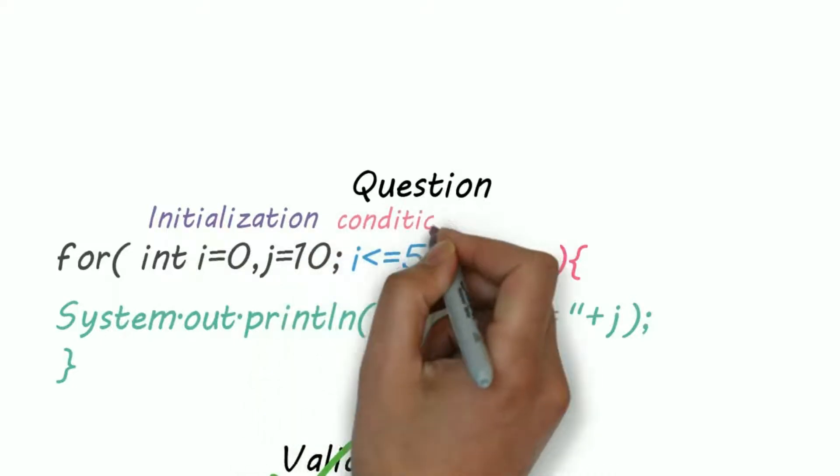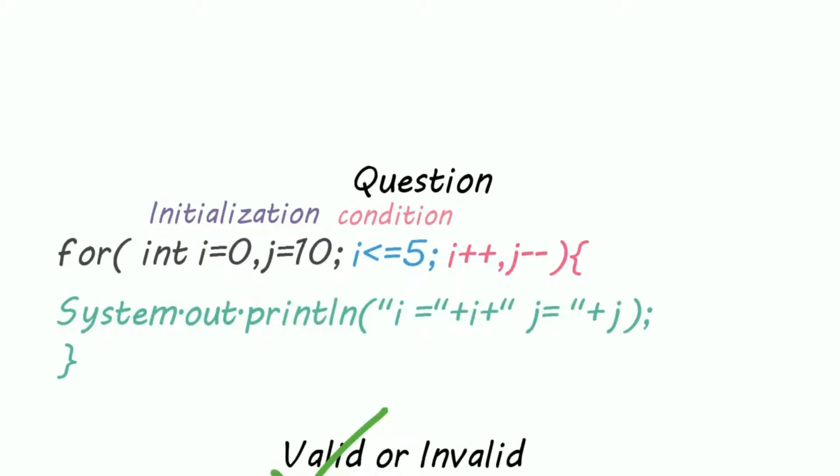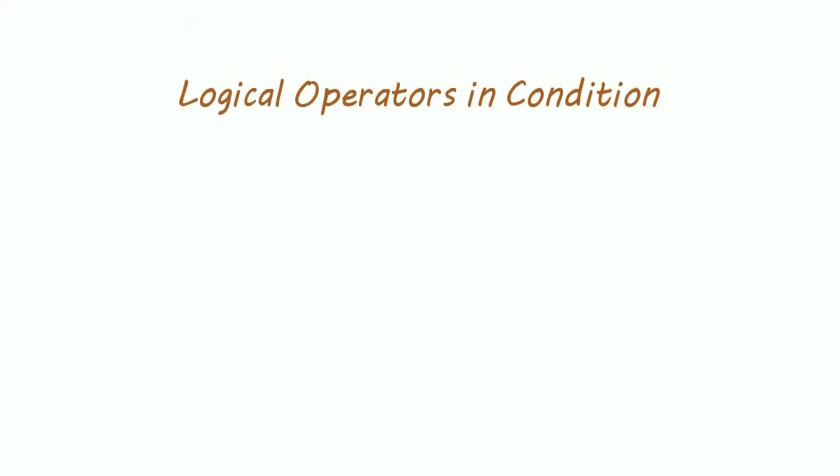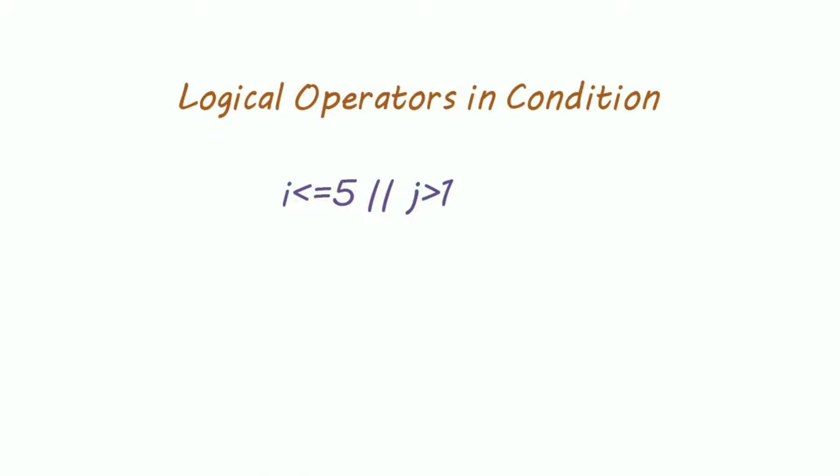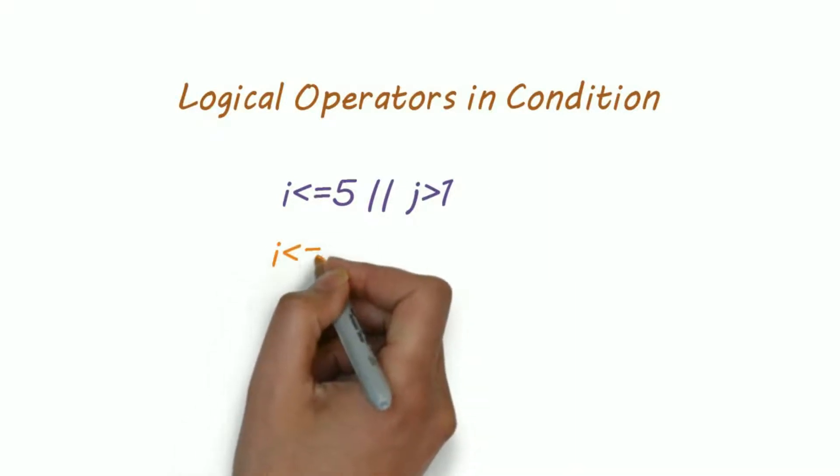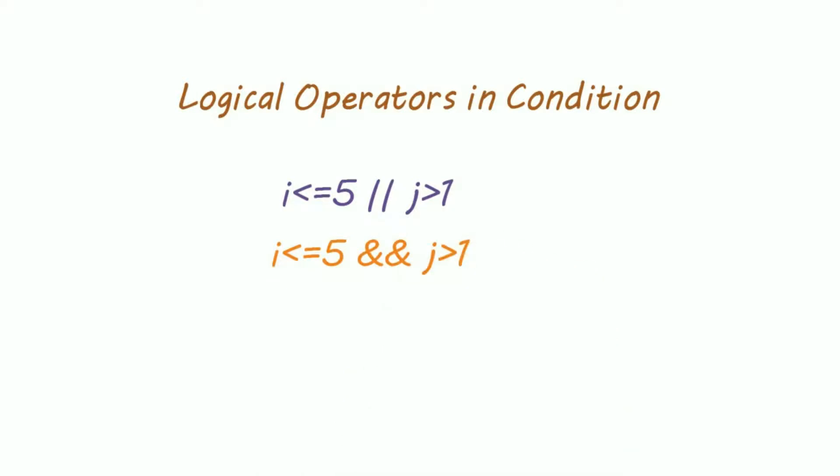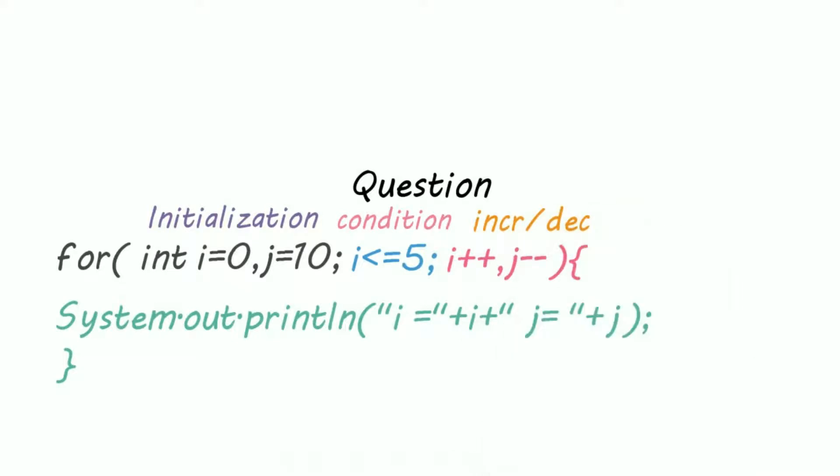The next is condition, that is till i has become five. What if I want to add more conditions? Then you need to use logical operators. For example, i is less than equal to five or j is greater than one, or i is less than equals five and j is greater than one.